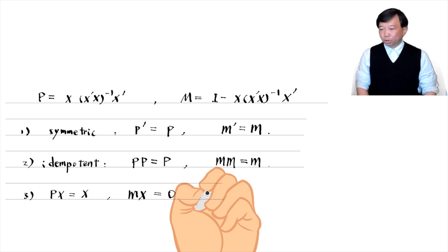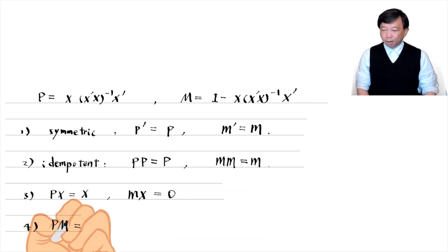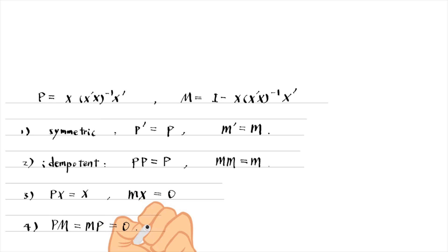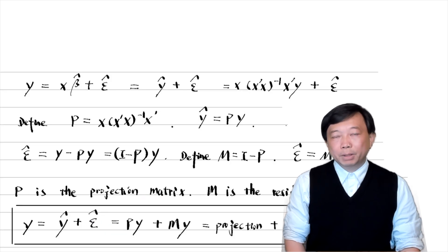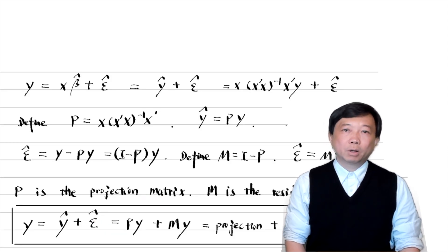We can show that M and P are orthogonal. Now we know that the OLS estimation method divides the outcome variable y into two parts, the projection and the residual.